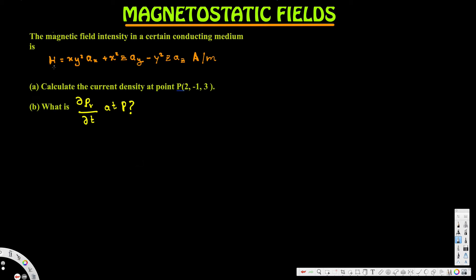Let's look at this problem. The question gives the magnetic field intensity in a conductive medium as H = xy²·ax + x²z·ay − y²z·az amperes per meter. Part a is asking to calculate the current density at point P. Part b is asking for the partial derivative of ρv with respect to t at P.